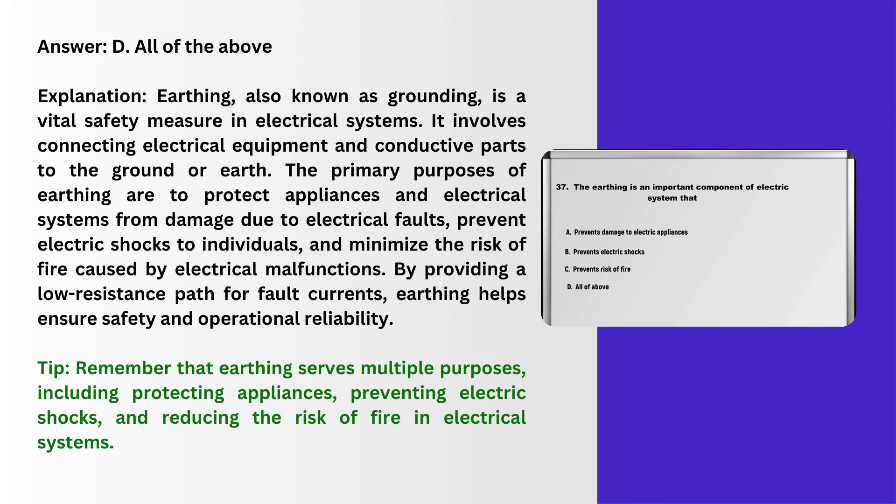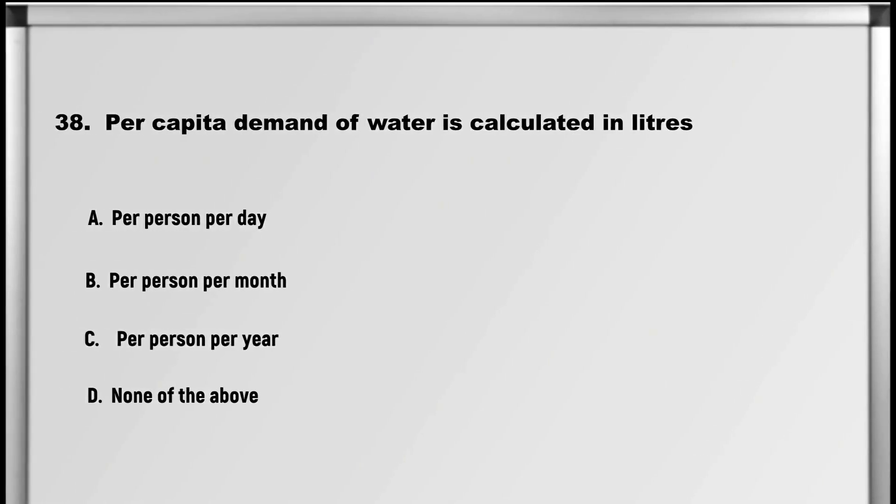Explanation: Earthing, also known as grounding, is a vital safety measure in electrical systems. It involves connecting electrical equipment and conductive parts to the ground or earth. The primary purposes of earthing are to protect appliances and electrical systems from damage due to electrical faults, prevent electric shocks to individuals, and minimize the risk of fire caused by electrical malfunctions. By providing a low resistance path for fault currents, earthing helps ensure safety and operational reliability. Tip: earthing serves multiple purposes, including protecting appliances, preventing electric shocks, and reducing the risk of fire in electrical systems.